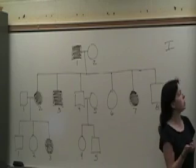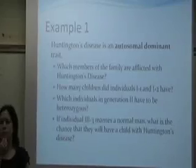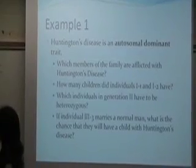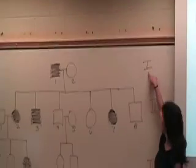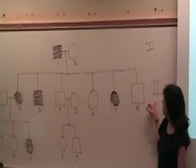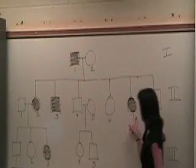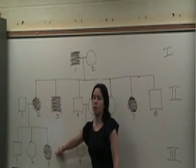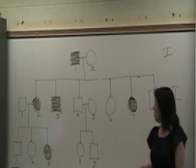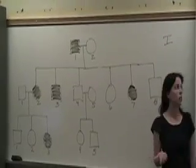The first question is asking which members of the family are afflicted with Huntington's disease. We will say individual 1 in generation 1 is affected. In generation 2, we have individuals 2, 3, and 7. And then in generation 3, we have one individual, individual 3. So that would be the answer to that question. There are 5 total that have Huntington's disease.